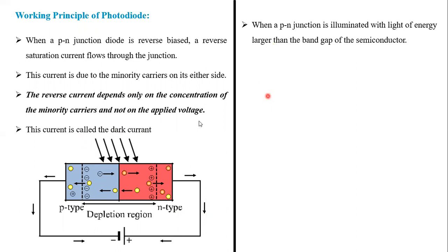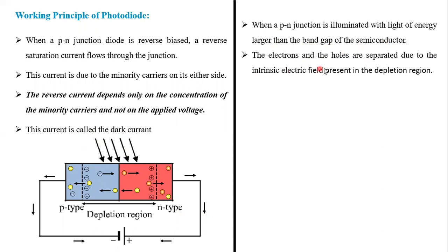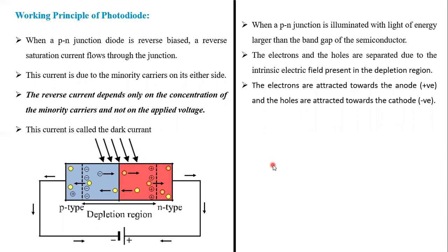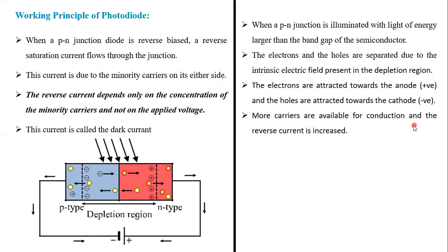When the p-n junction is illuminated with light having energy larger than the band gap energy, electrons and holes are generated. They are separated due to the intrinsic electric field present in the depletion region. The electrons are attracted towards the anode — the positive terminal of the battery — while the holes are attracted towards the cathode, the negative side of the battery. More carriers are now available for conduction and the reverse current increases.